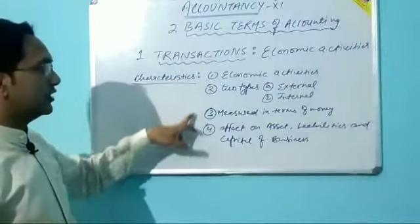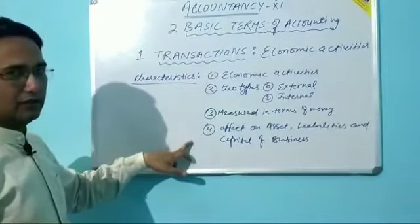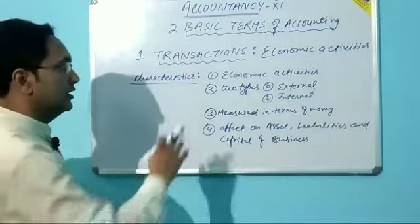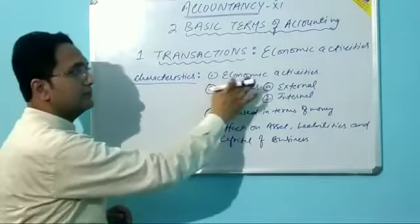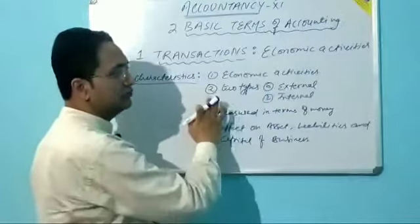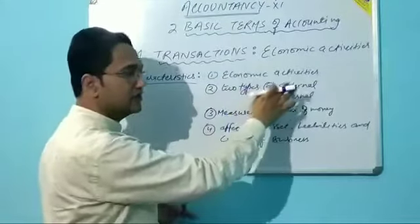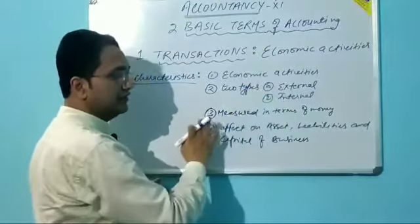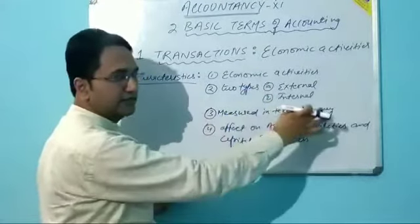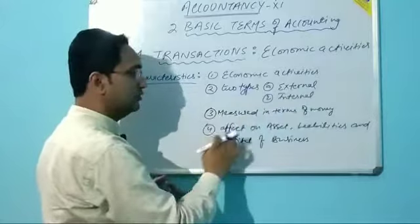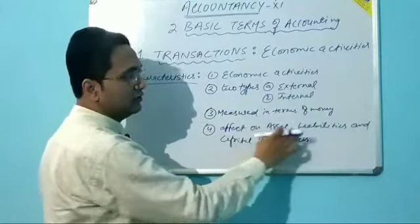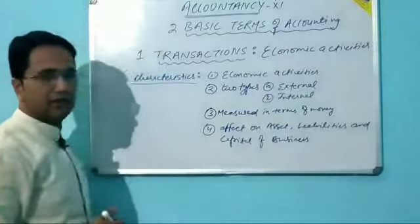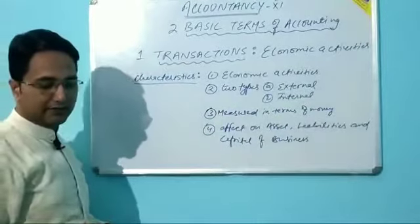These are the four characteristics of every business transaction: one, it should be an economic activity; two, there are two types of transaction — external and internal; three, it is measured in terms of money; and four, it has an effect on assets, liabilities, and capital of the business.